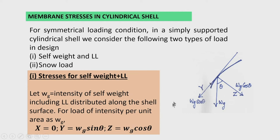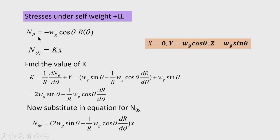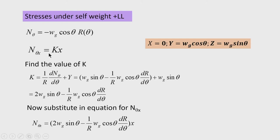From the equations of equilibrium, we obtain the different stresses step by step. First, N_theta: N_theta equals minus Z times r, so N_theta is directly given by minus W_g cos(theta) times R(theta), where Z is W_g cos(theta) and R is a function of angle theta. For a circular cylindrical shell, R is constant and does not vary with theta. Then we calculate N_theta_x, the membrane shear force. N_x_theta equals minus K times x, where K is given by (1/R)(d N_theta / d theta) plus capital Y, capital Y being the component of load along the tangent to the directrix.